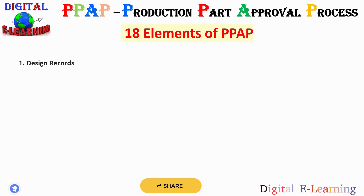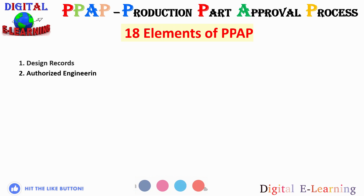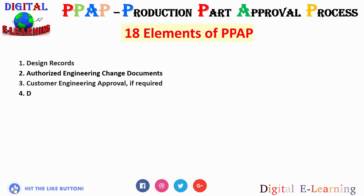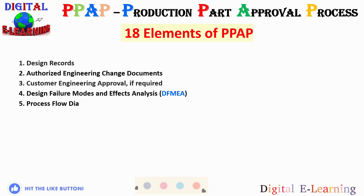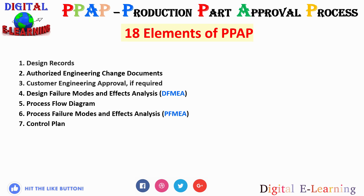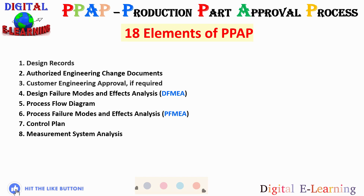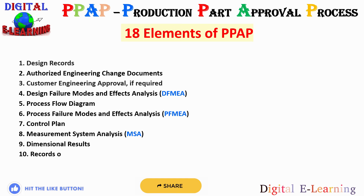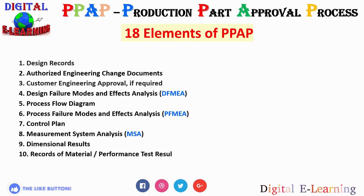The 18 elements and documents that comprise PPAP are: 1st is the design record; 2nd is the authorized engineering change document; 3rd is the customer engineering approval, if required; 4th is the design FMEA; 5th is the process flow diagram; 6th is the process failure mode and effects analysis; 7th is the control plan; 8th is the measurement system analysis; 9th is the dimensional results; 10th is the record of material and performance test results; 11th is the initial process studies.